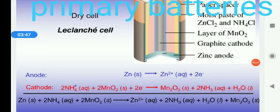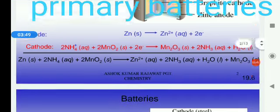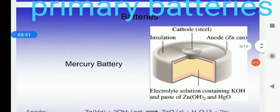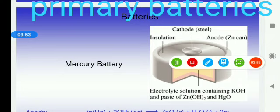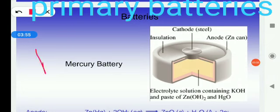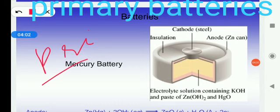Now this is the dry cell which is a primary cell. Mercury cell - it is also a primary cell used in wristwatches.